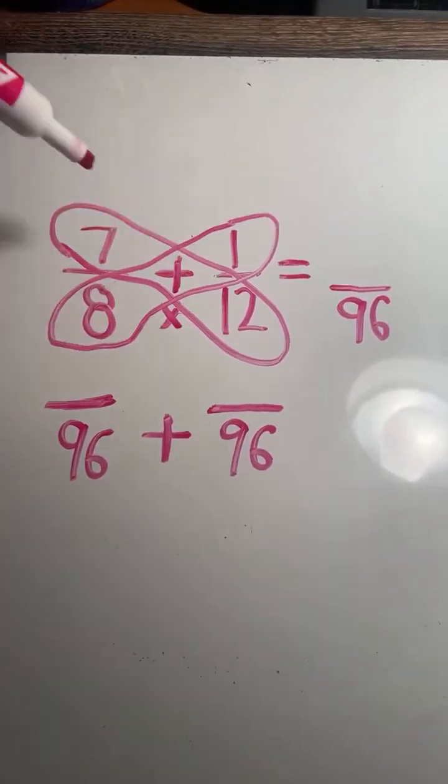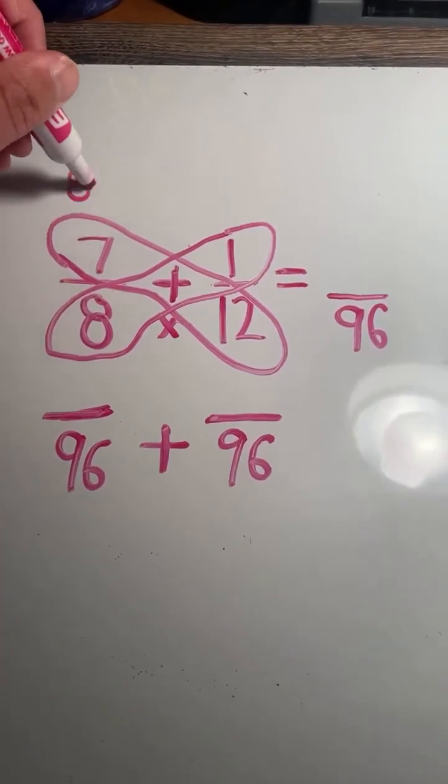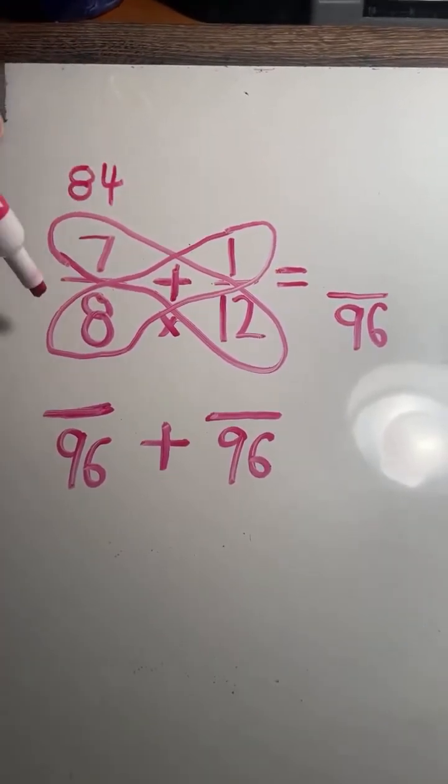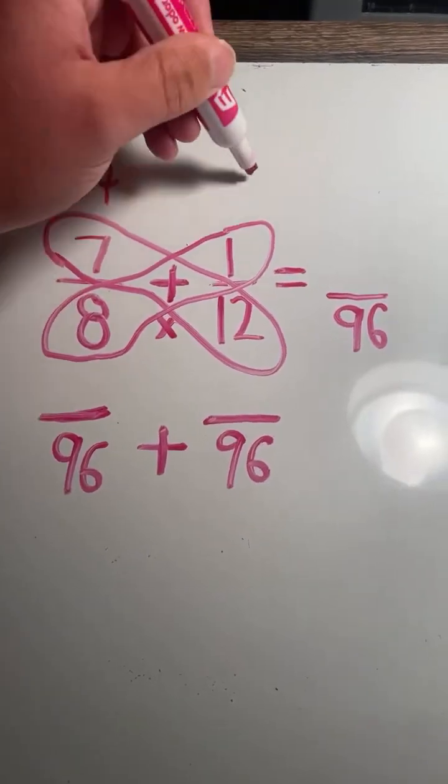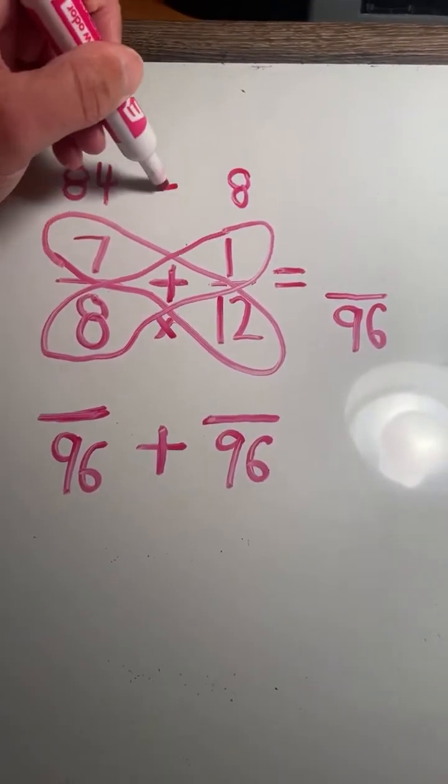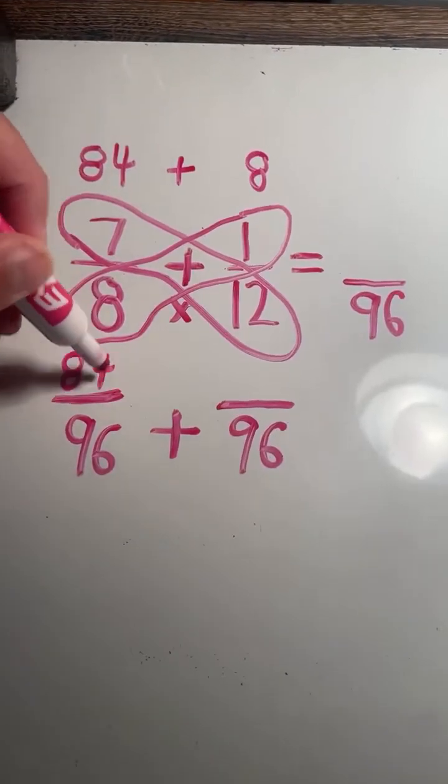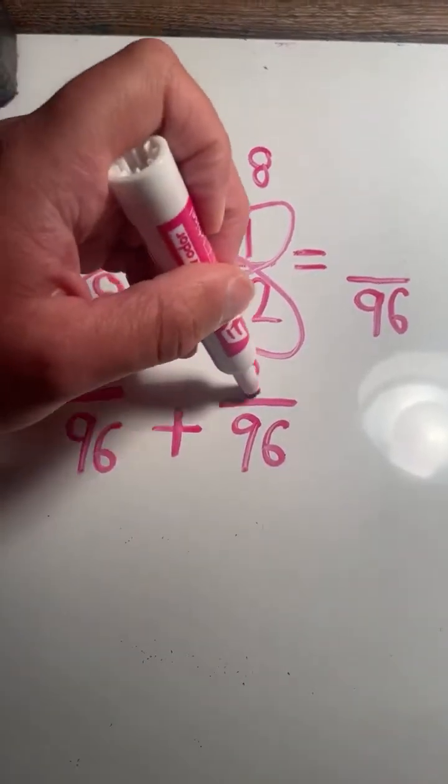So 7 times 12 equals 84. 1 times 8 equals 8. So we now have 84 over 96 plus 8 over 96.